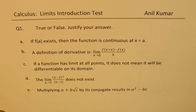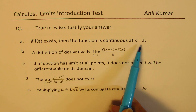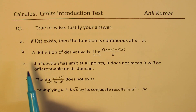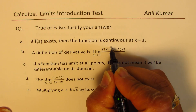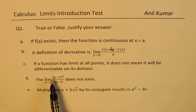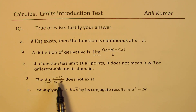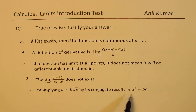Question number one is true or false — you need to justify your answer. A: If f of a exists, then the function is continuous at x equals to a. B: A definition of derivative is limit h approaches 0 for f of x plus h minus f of x over h. C: If a function has a limit at all points, it does not mean it will be differentiable on its domain. D: The limit x approaches 2 for x minus 2 whole squared divided by absolute value of x minus 2 does not exist. E: Multiplying a plus b square root c by its conjugate results in a squared minus bc.